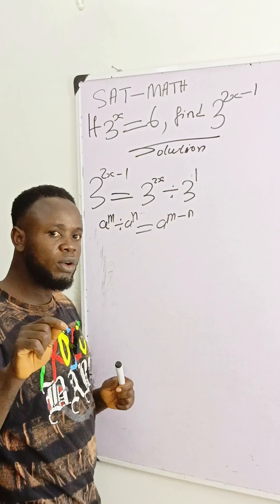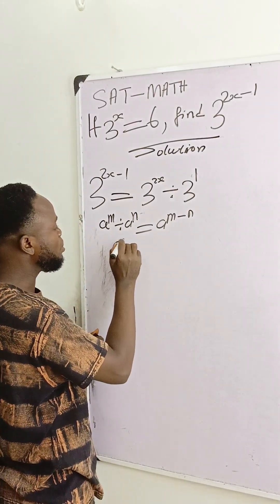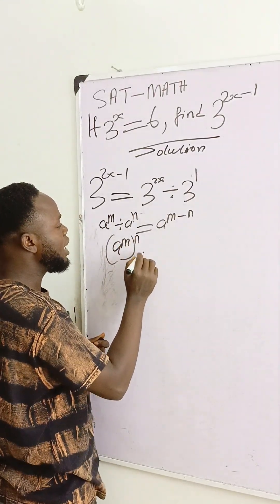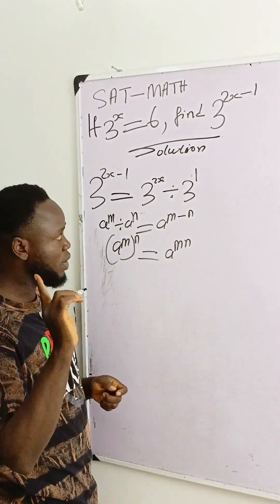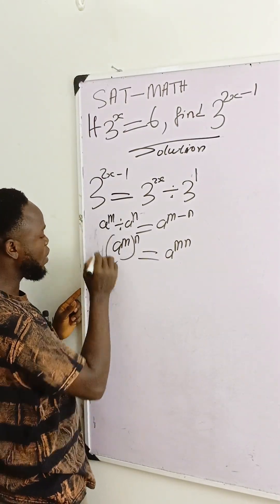Then another law we'll use: a raised to power m in brackets, with another exponent outside, means we multiply them together - m times n. So if that's true, we can write this.